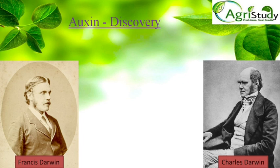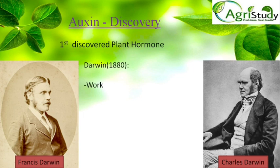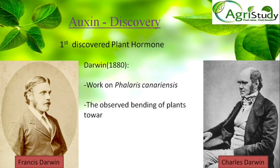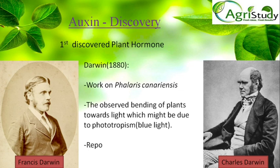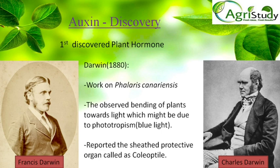Auxin discovery — it is the first discovered plant hormone. It was initially worked on by a father and his son, Charles Darwin and Francis Darwin, on canary grass. Darwin in 1880 worked on this canary grass, that is Phalaris canariensis. They observed bending of the plant towards light, which might be due to phototropism. They observed that when the plant is exposed to blue light, it showed bending towards the light, and reported the sheath protective organ called the coleoptile — that is the sheath protective cover to the shoot.